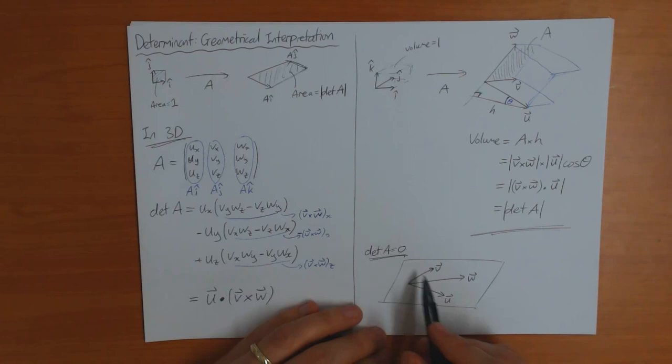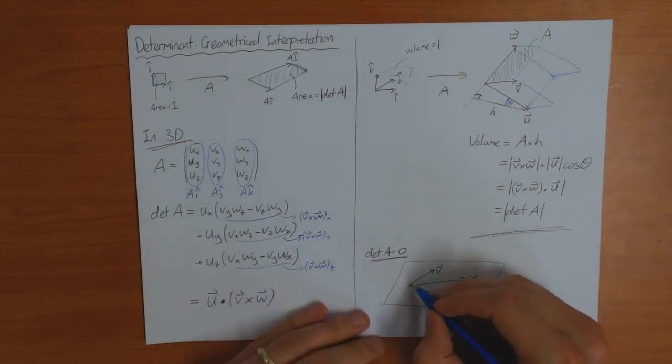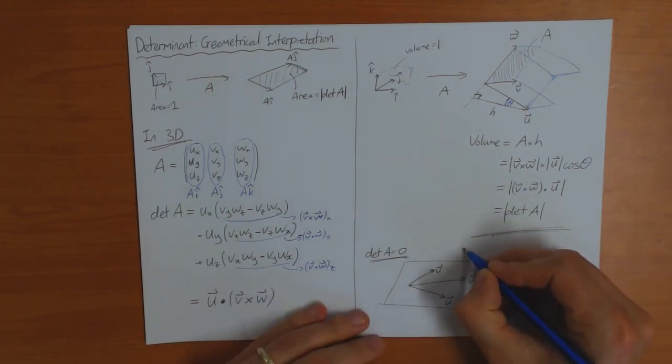So determinant A equals zero means that U, V, and W all lie in the same plane. But then it's obvious that there can't be an inverse. Because I can take a point not in this plane.